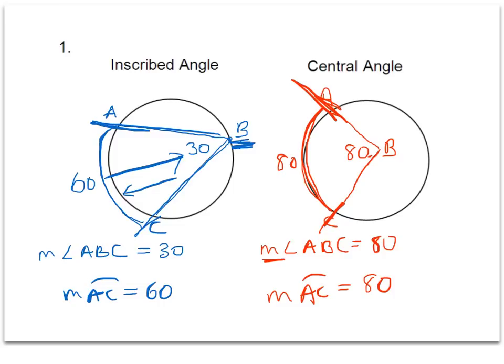So be aware of the relationships as we go forward in this section. If you're looking at central angles, the intercepted arcs will be equal, and if you're looking at inscribed angles, we have that doubling relationship where the inscribed angle is going to be half of the intercepted arc.